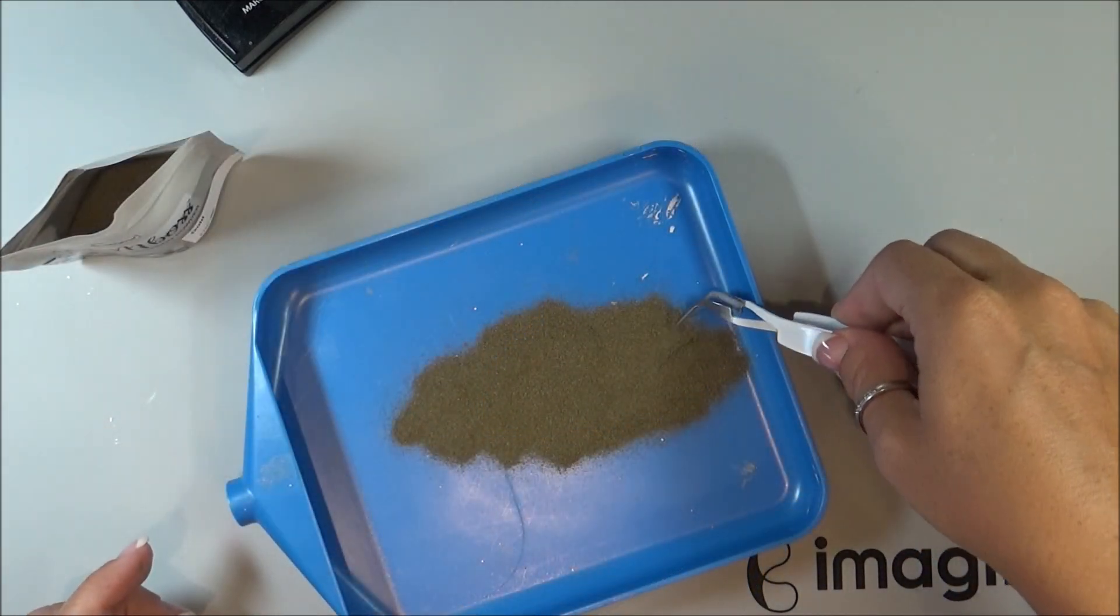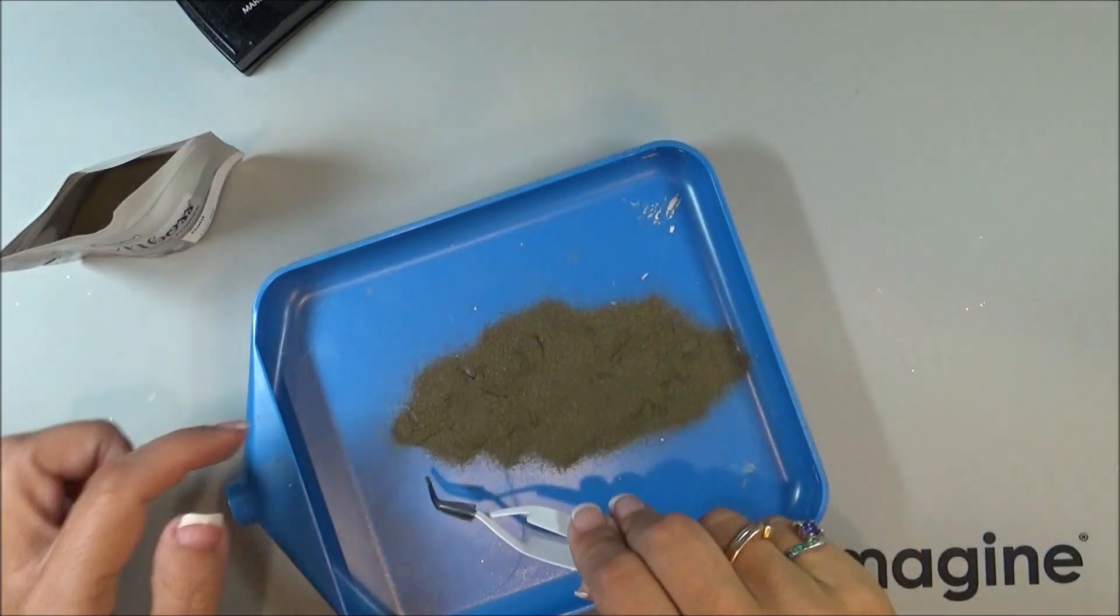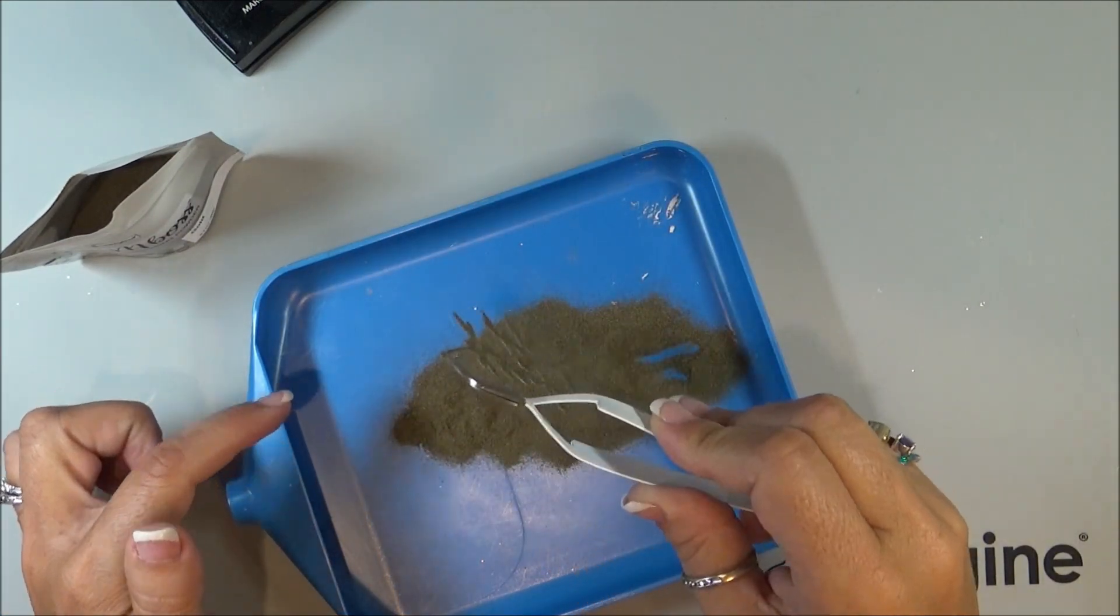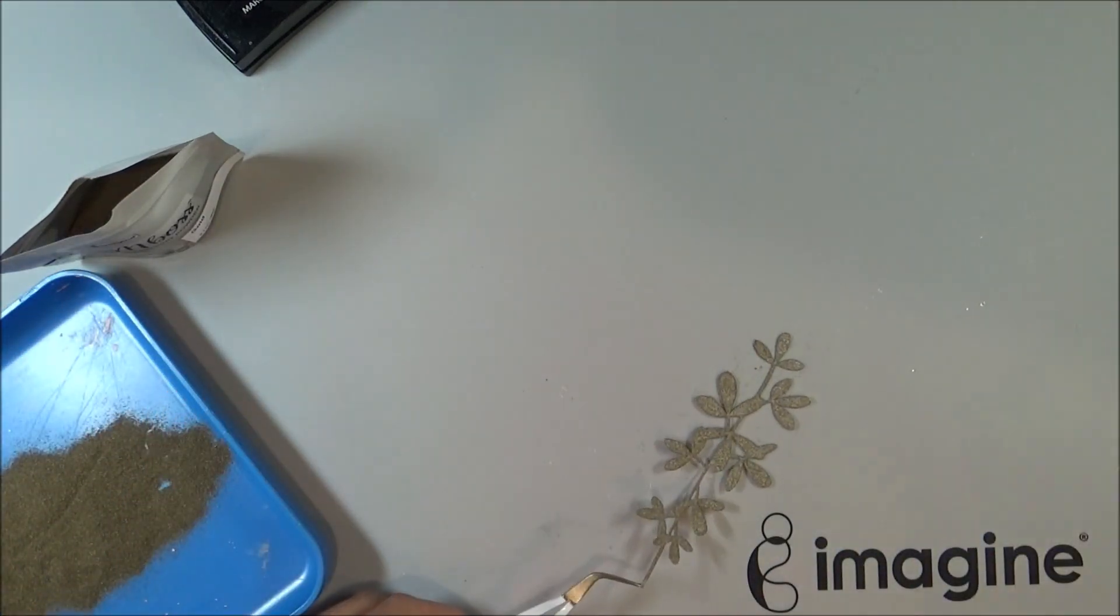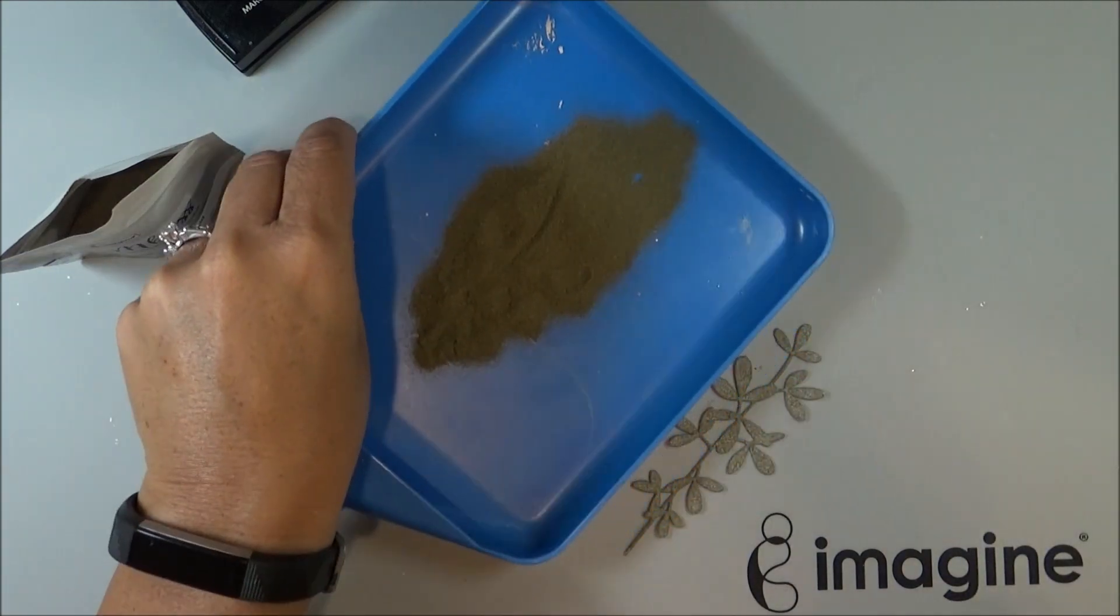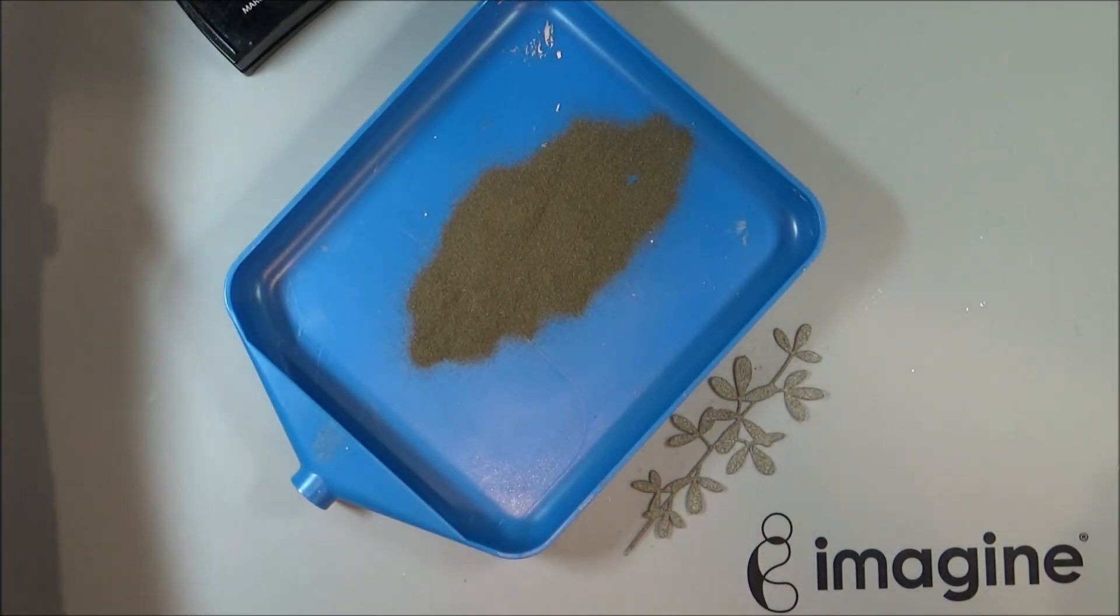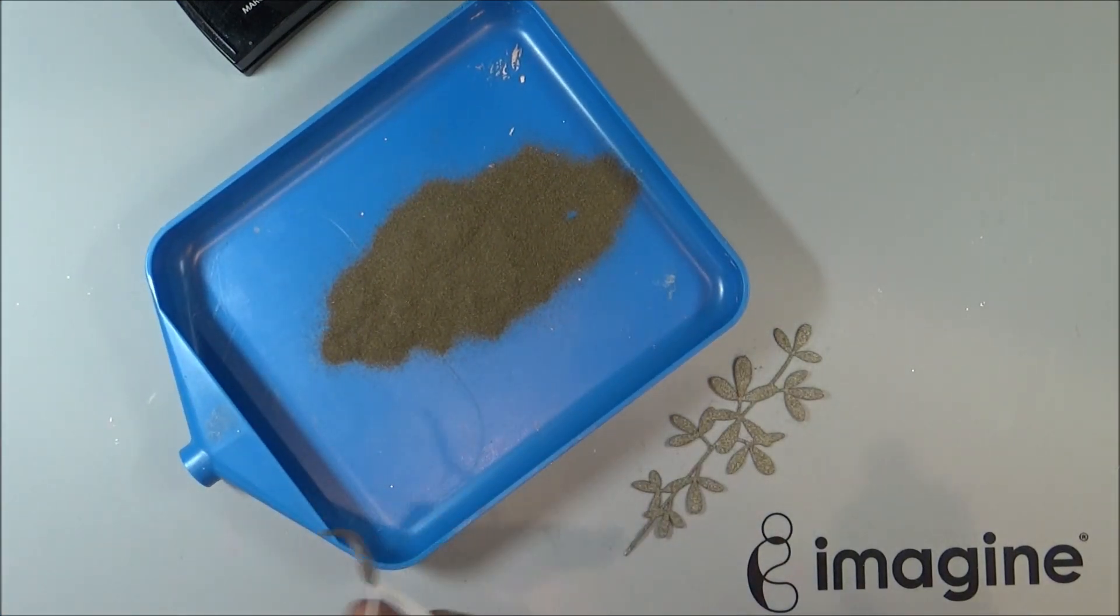I'm taking a pair of tweezers, finding my die, wherever it's at. There it is. I'm going to heat set it, and then while it is still hot, I'm going to dip it back into the embossing powder that I have over here.